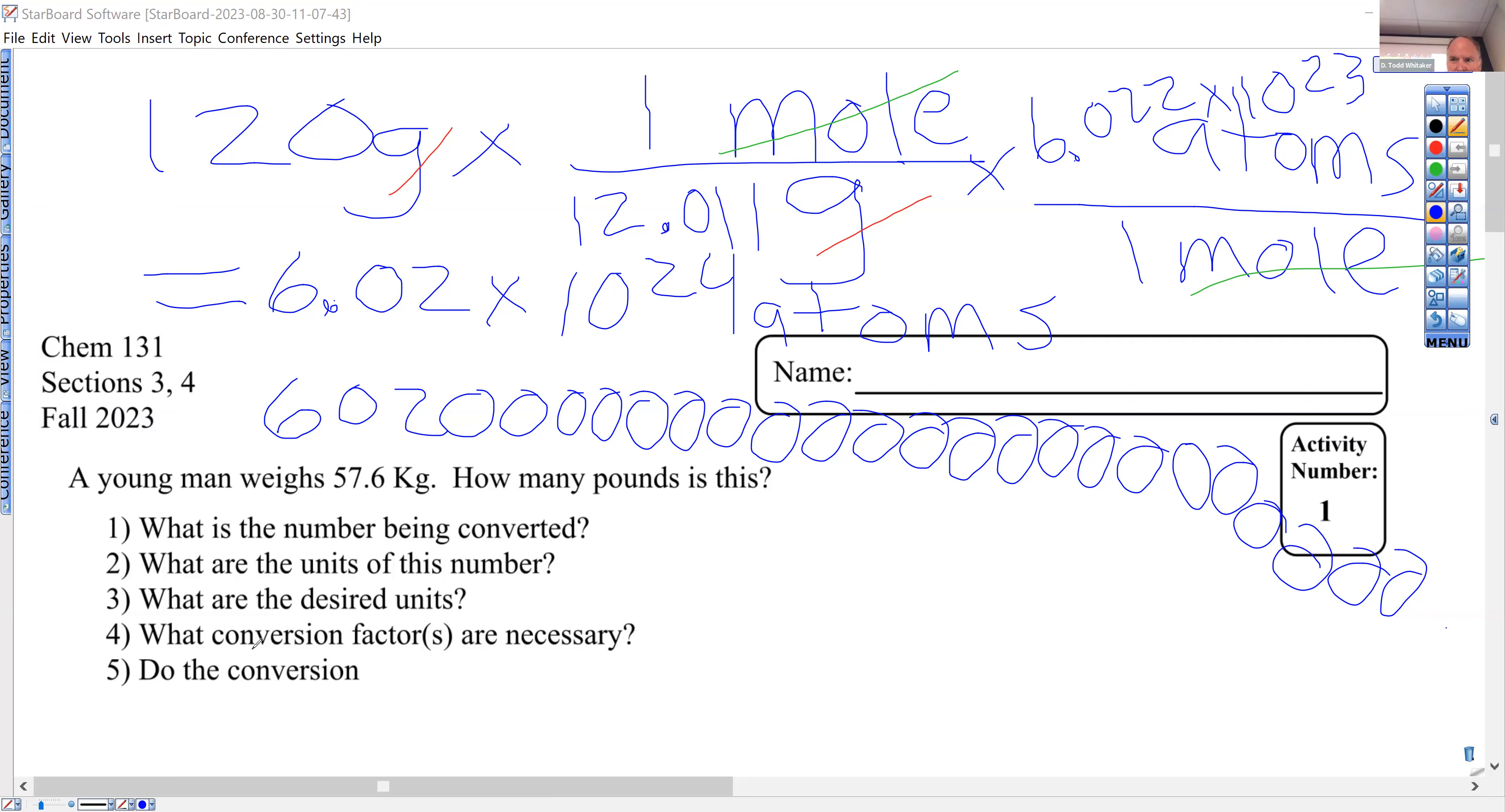There's only one number here. We've got a highlighter and the number being converted is pink. Sometimes non-verbal answers are pretty good. You can just write down 57.6, don't write down kilograms - that's not a number. What is kilograms? Kilograms is a form of unit and units need to be converted in these problems.